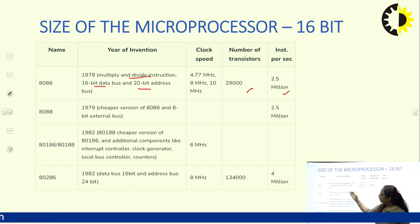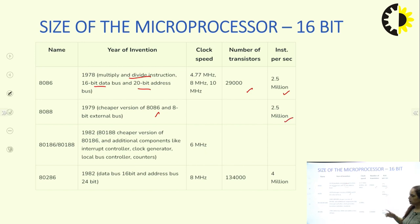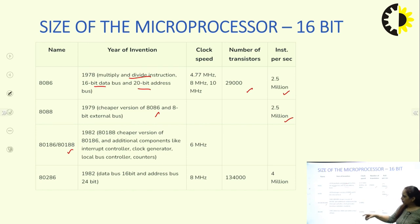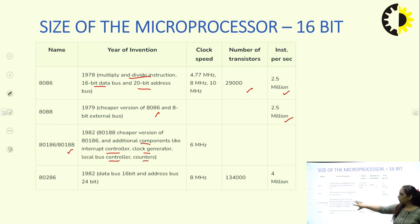The Intel 8088 is a slightly cheaper version of the 8086, invented in 1979, and can process approximately 2.5 million instructions. The 80186 and 80187 have additional components like an interrupt controller, clock generator, clock bus controller, and counters — a bit more functionality — with a working clock frequency of 6 megahertz.